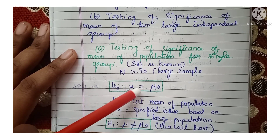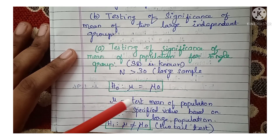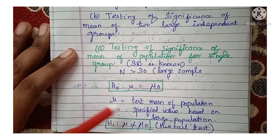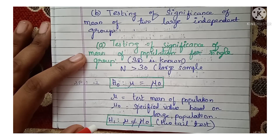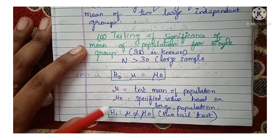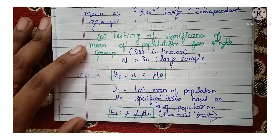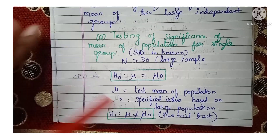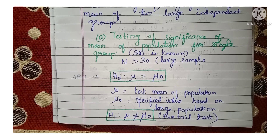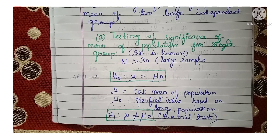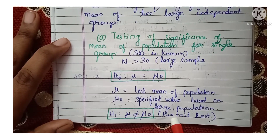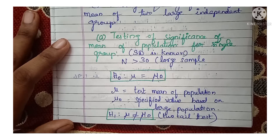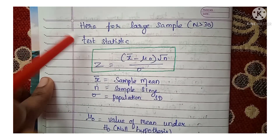So in the null hypothesis H₀, mu equals mu-naught, where mu is the test mean of the population and mu-naught is the specified mean value based on the large population. The alternate hypothesis H1, also called the research hypothesis, states that mu is not equal to mu-naught — that is, it can be either less than or greater than mu-naught. Because it is 'not equal,' meaning it can be less or more, this is called a two-tailed test.